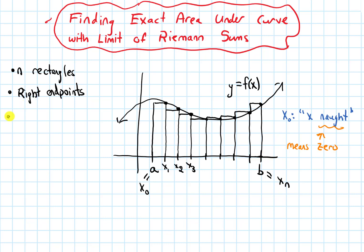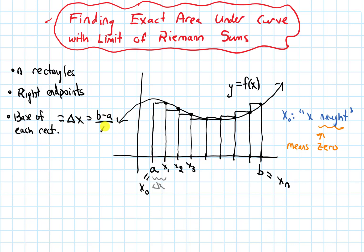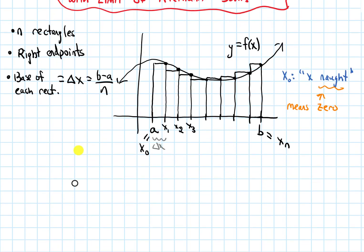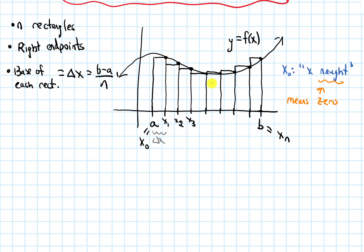Now I need to know the base of each rectangle. We've given a formula for that before — we've called this delta x. The formula for delta x is: you take the length of the whole interval, which is b minus a, and divide by the number of rectangles, which is n. So delta x equals (b minus a) over n.